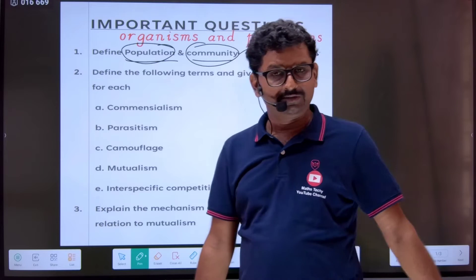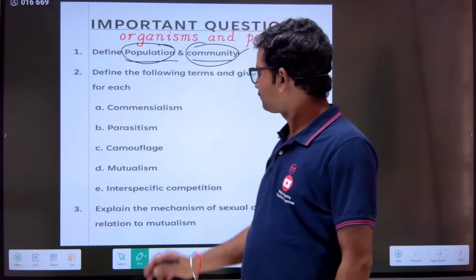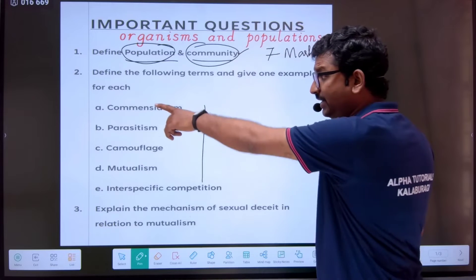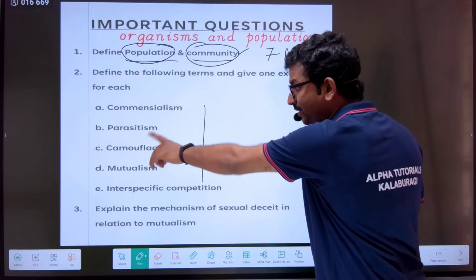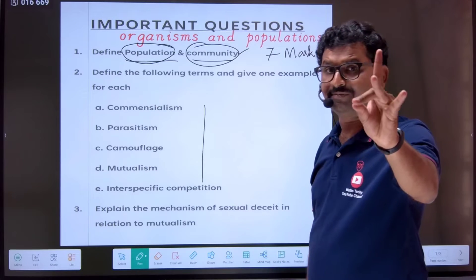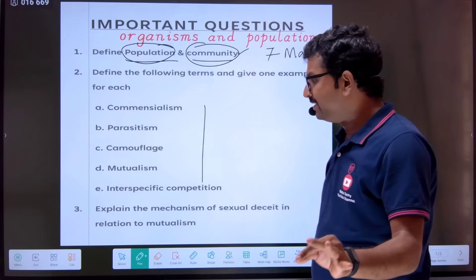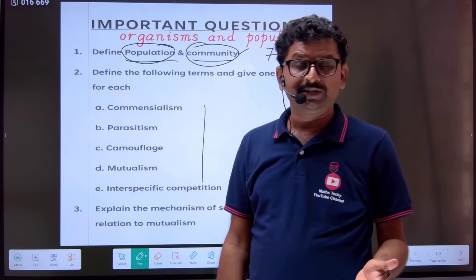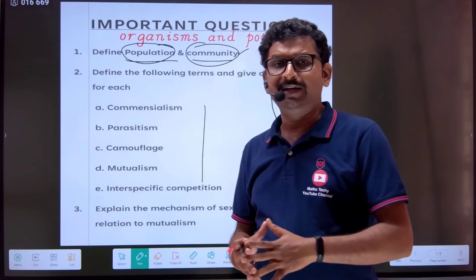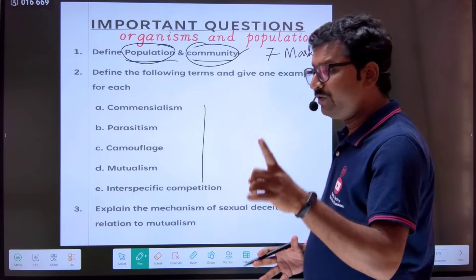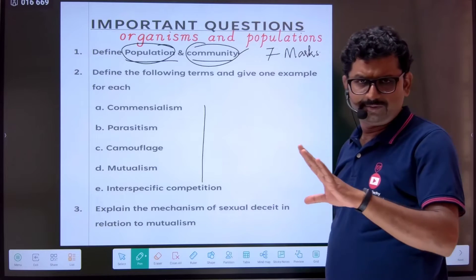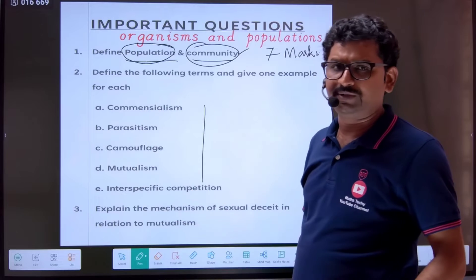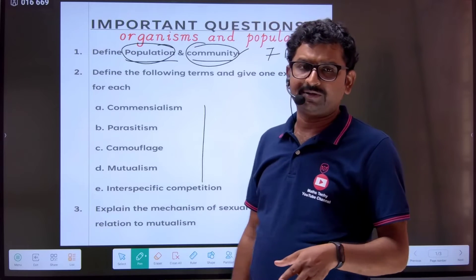So this question — especially commensalism, parasitism, mutualism, amensalism, and competition — each of these is worth one mark each. They are supposed to be asked as one-mark questions, but this kind of question, especially for five marks, will also be asked.